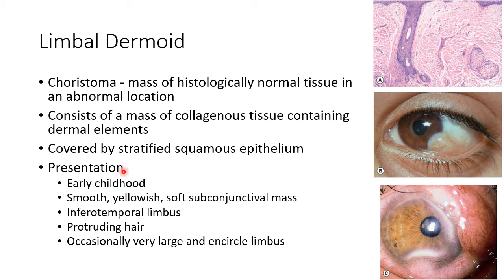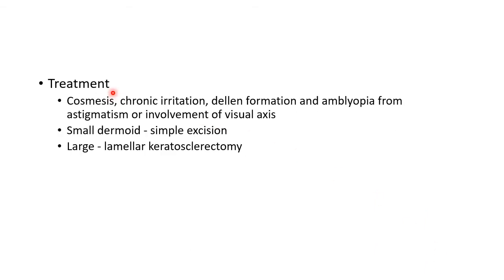Limbal dermoid usually presents in early childhood as a smooth, yellowish, soft subconjunctival mass. The most common location is the inferotemporal limbus. It may contain protruding hair, and can be very large and encircle the limbus in some cases.